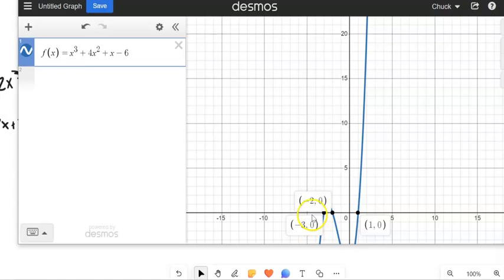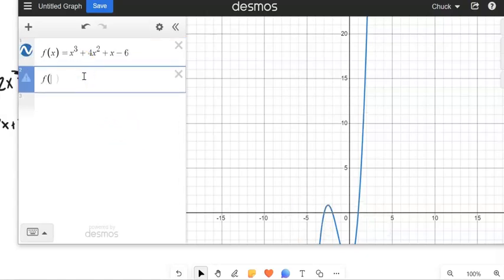So I could plug those back in. For example, if I go like f of one, yeah, it's a zero or f of negative two. Yeah, it's also a zero. So those are there.